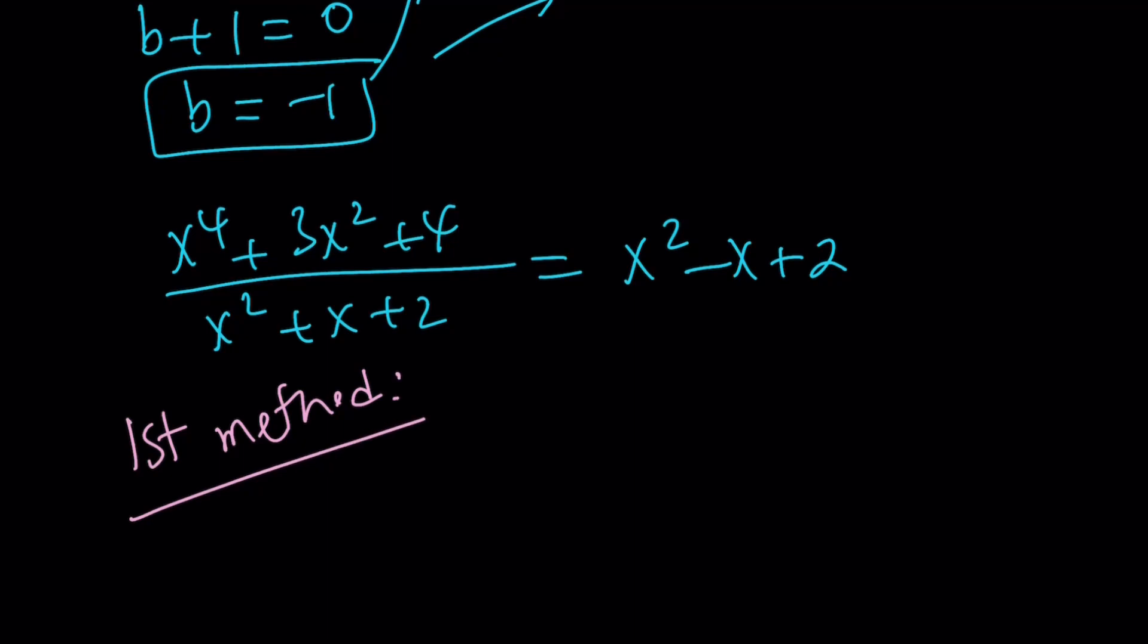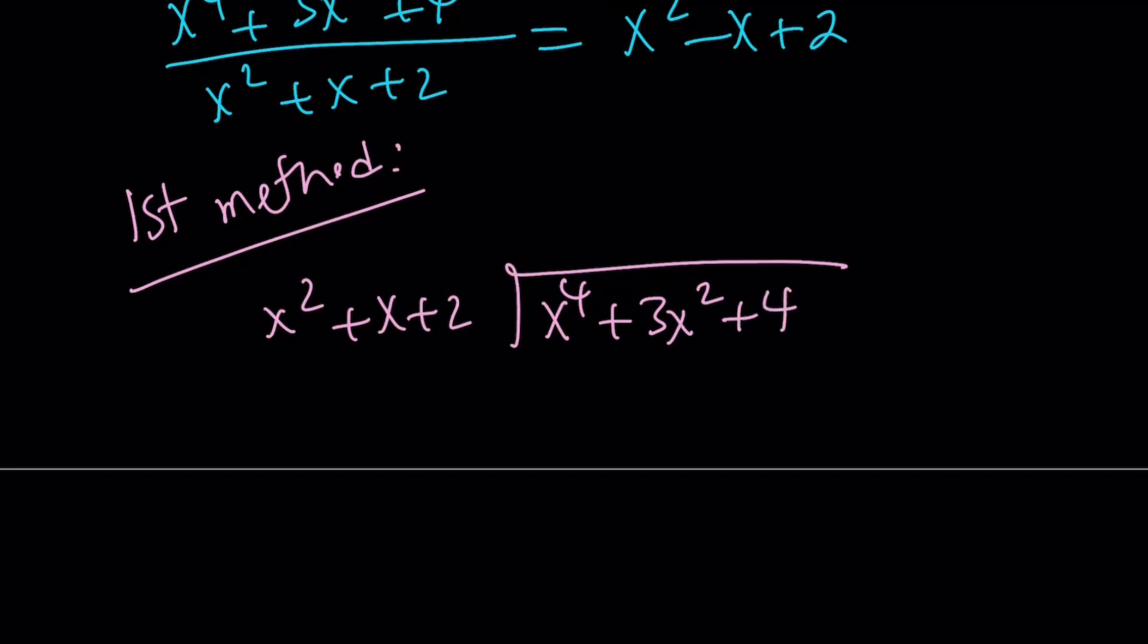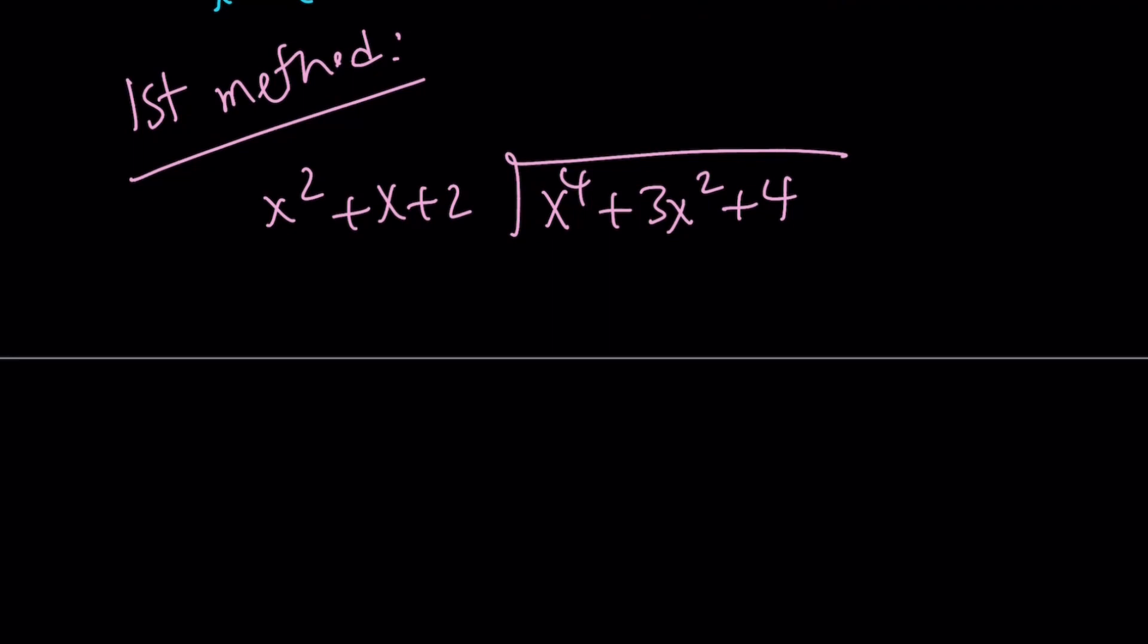First method. The first method is called no pain, no gain. So, we're going to be doing long division. Here's how it works. We're going to divide. And I apologize if you're not familiar with this type of notation, but this is how we divide things here. We're going to divide x squared plus x plus 2 into x to the 4th plus 3x squared plus 4. So, x squared goes into x to the 4th how many times? Let's go ahead and find out.